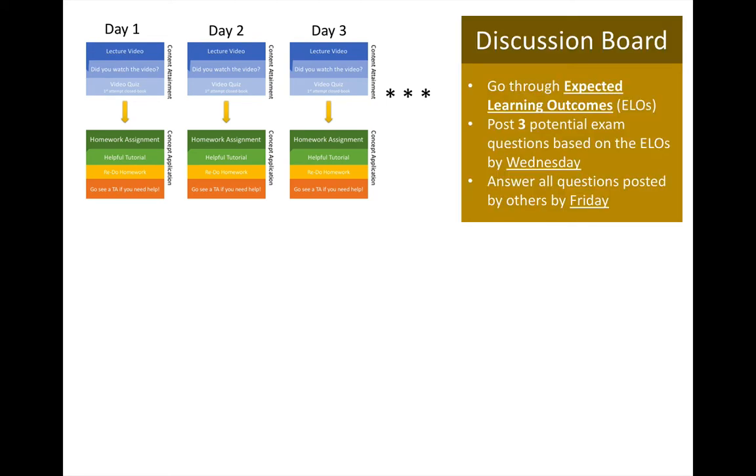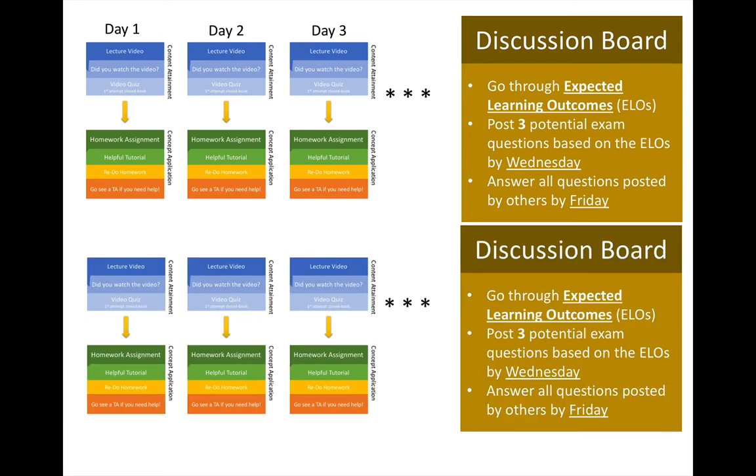And at the end, you will participate in a discussion board. So you've been placed into groups in your class. You'll visit the tab that says the little link that's marked discussion. And you're going to use the expected learning outcomes to create exam questions. So I'll show you on Canvas where to get to the expected learning outcomes. You're going to post three original questions that you think could be potential exam questions. And then your classmates will answer your questions. And then you will answer their questions. So you're going to answer everybody's questions in the week by Friday. So you post these questions by Wednesday. Answer the questions by Friday.